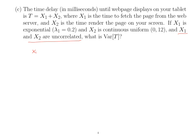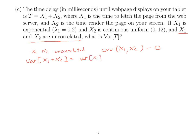X₁ and X₂ uncorrelated is the same thing as saying the covariance of X₁ and X₂ equals zero. Then the variance of X₁ + X₂ equals the variance of X₁ plus the variance of X₂ plus two times the covariance of X₁ and X₂. But that covariance is zero. So that's the first step to solving this problem.